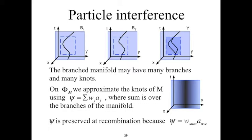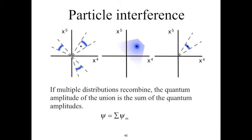The branched manifold may have many branches and many knots. In order to describe those knot geometries on the unbranched manifold Φm, we approximate the knots of M using ψ equal to the sum of wj times aj, where wj is the weight of the jth branch and aj is the amplitude of the knot on the jth branch. Then ψ is preserved at recombination because ψ equals w_sum times a_average, and the individual quantities w_sum and a_average are preserved at recombination. If multiple different distributions recombine, they pass through an intermediate distribution where all branches are recombining with each other, and converge to an equilibrium distribution. The quantum amplitude of the union of the distributions is the sum of the quantum amplitudes: ψ is the sum over ψ_m, where ψ_m is the quantum amplitude of the contributing distributions.